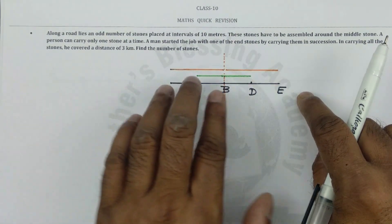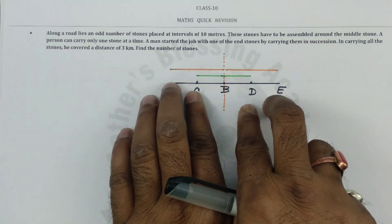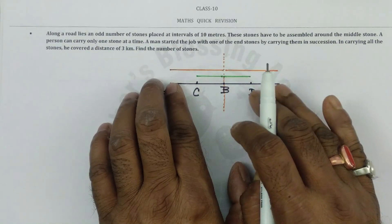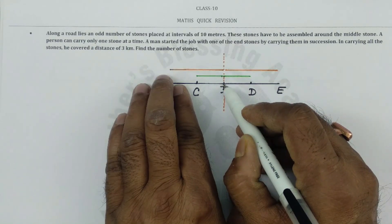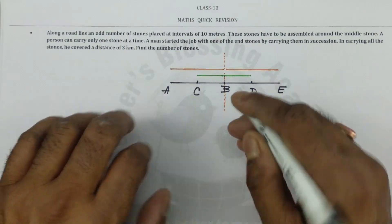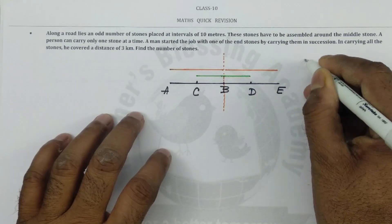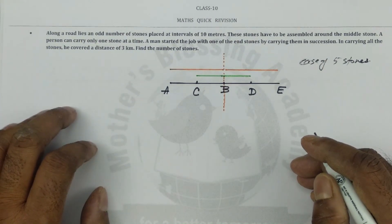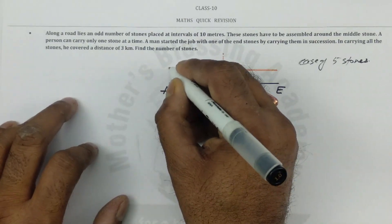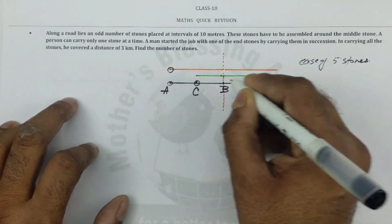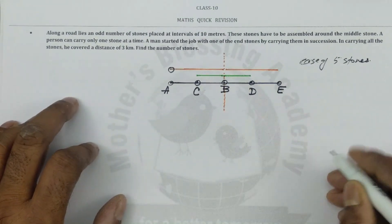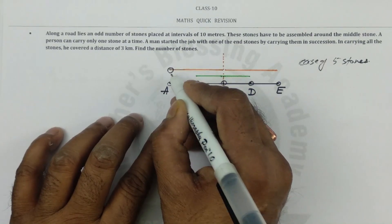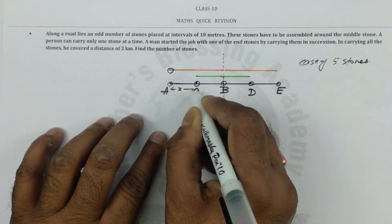On this road, since there is an odd number of stones, on one side there will be an even number of stones and on the other side there will be another even number of stones, with one stone in the middle. Taking the example of five stones: here is the first stone, second, third, fourth, and fifth. Five is an odd number. All the distances between stones are x meters.